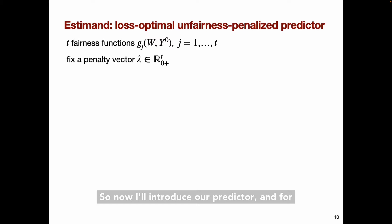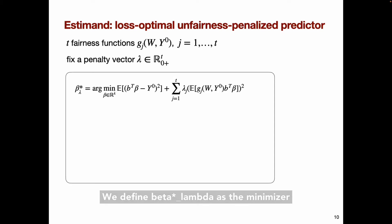So now I'll introduce our predictor. And for now, I'll just focus on the counterfactual setting where Y tilde is equal to Y zero, the counterfactual outcome. Our estimand is a loss-optimal, unfairness-penalized predictor of Y zero. In the paper, we have two other types of estimands that involve constrained optimization instead of a penalized form, but here I'm just presenting the penalized form. So suppose we have T fairness functions and fix some positive penalty vector lambda. We define beta star lambda as the minimizer of the mean squared error plus the sum of weighted squared unfairness values, where the weights are given by these lambda j's.